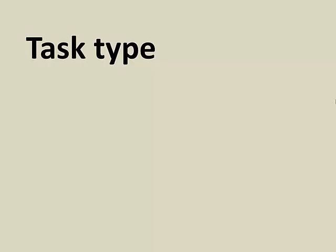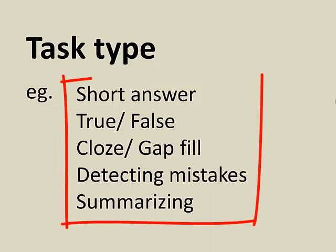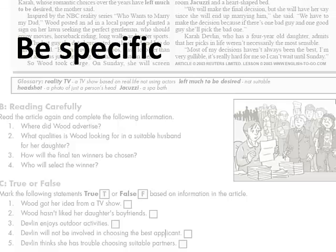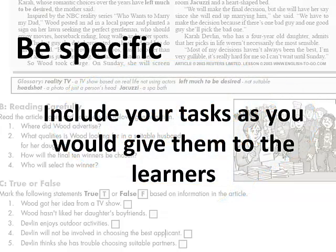You also need to decide what kind of task type you're going to use. You've already seen quite a lot of course books, so you know the sort of task types that exist. You might think about short answers, true or false, clozes, gap fills, detecting mistakes, or summarising — all of these could be used for reading or listening texts. It's important that you're very specific: it's not enough to say you're going to give them some gap fill questions. You need to include the tasks as you would give them to the learners, so if you're using a worksheet, include that worksheet with your assignment.